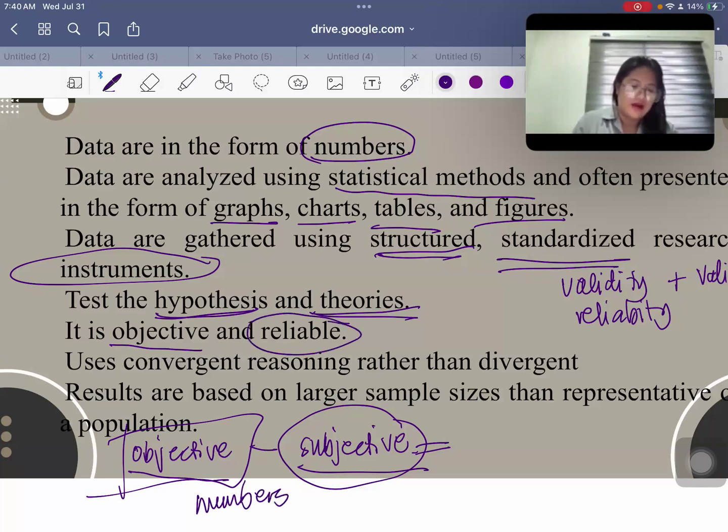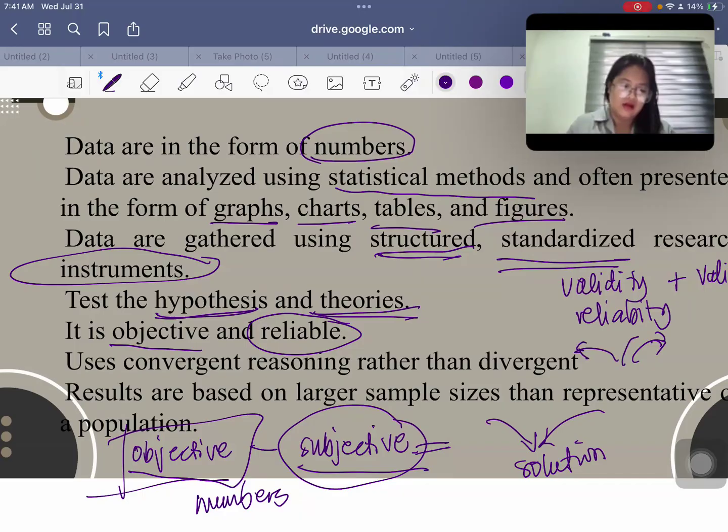They are reliable. They won't change. So it also uses convergent reasoning rather than divergent. So these two are different in a sense that we would often see this as to how the data is approached. So in that case, the way we answer the problems or the way we address the selected question, it is convergent going towards one solution. However, when we talk about divergent, it's more on creativity, like you think of multiple ways on how to solve the problem.